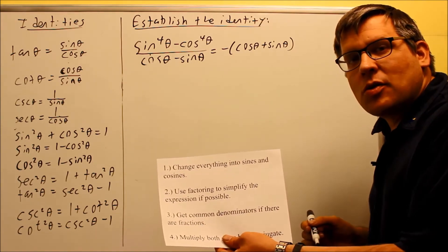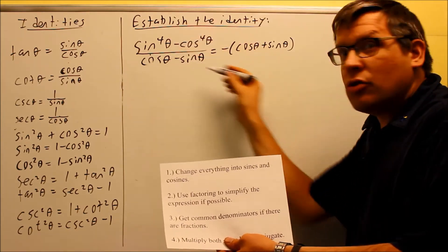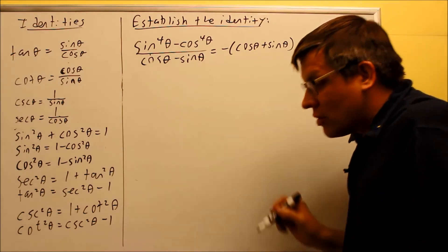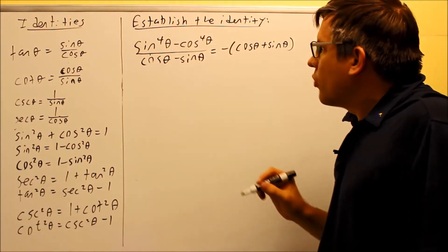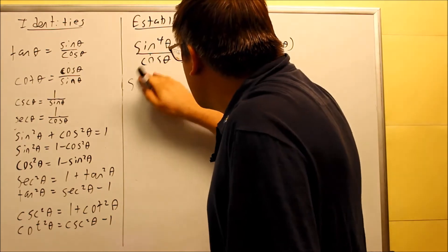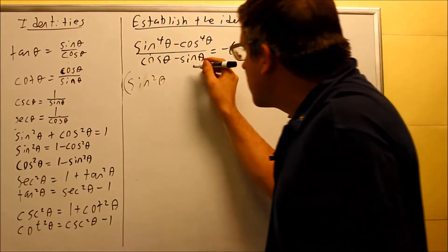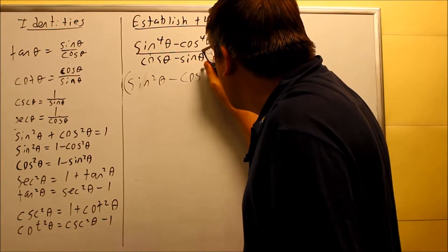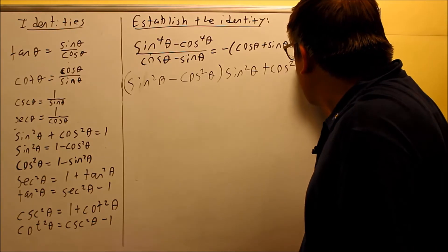The next one on the list is use factoring to simplify the expression if possible. That's something I can do with this one. I notice that there's a difference of squares on top there, so I'm going to use my difference of squares factoring technique to take care of that. So this is going to be sine squared minus cosine squared, and this is going to be sine squared plus cosine squared.